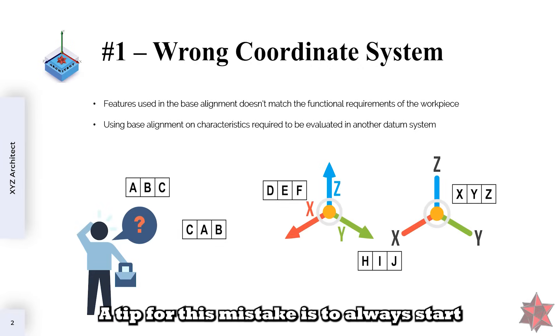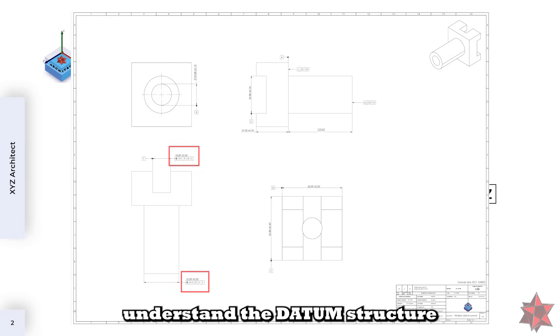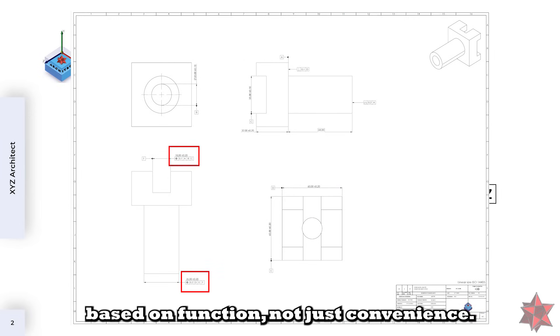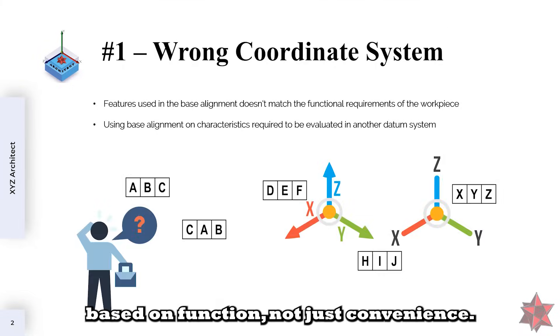A tip for this mistake is to always start by checking the drawing. Understand the datum structure and build your alignment based on function, not just convenience.